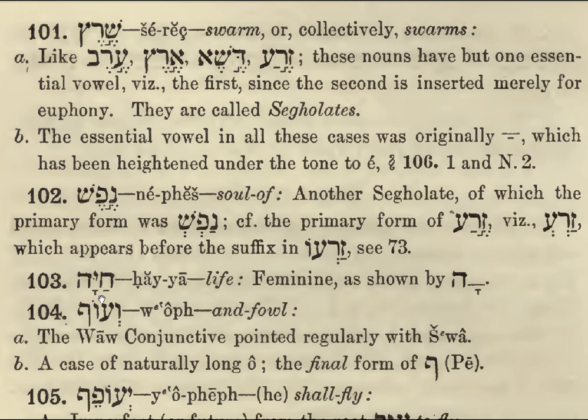Chaya — life. It's feminine, which is shown by the Ah ending. Note the Dagesh here: Chaya. Venghof — fowl, that's flying creatures. The Vav conjunctive here is regular with the Shva, no surprises.